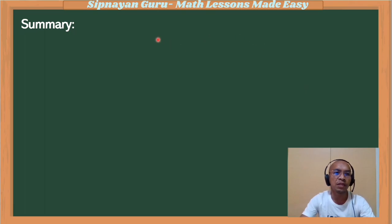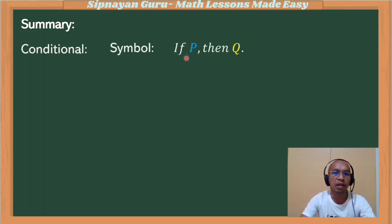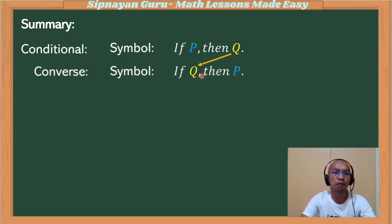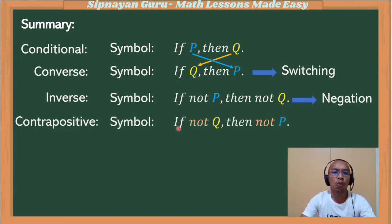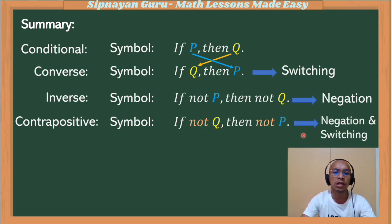Now let's summarize. The conditional statement, the if-then form: if P then Q — if hypothesis, then conclusion. Its converse: we switch, so if Q then P. Its inverse: we negate the hypothesis and conclusion, so if not P, then not Q. For the contrapositive: we switch and negate simultaneously, giving if not Q, then not P.